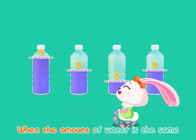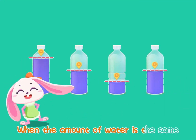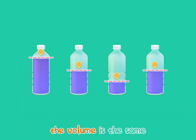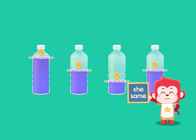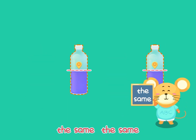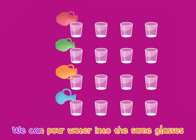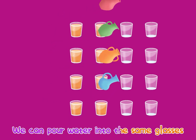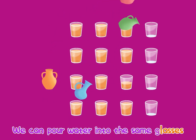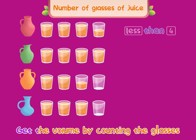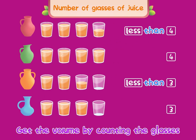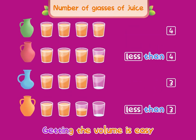When the amount of water is the same, the volume is the same. If the container is different, we can pour water into the same glasses and get the volume by counting the glasses. Getting the volume is easy.